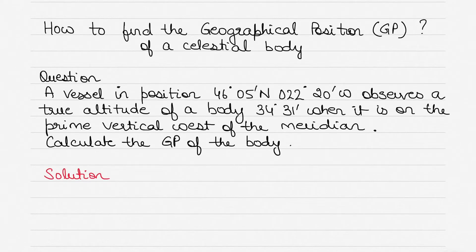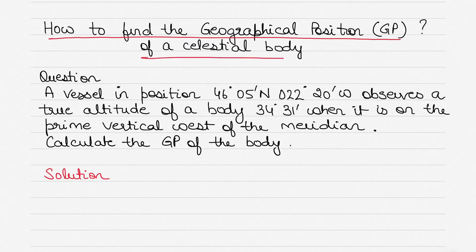Hi everyone, today I continue with teaching you about the rational horizon diagram and the PZX triangle and how it can be used to find the different aspects of a celestial body's position. In today's video we'll be focusing on how to find the geographical position, known as GP, of a celestial body. I'm making this video because in the last video I mentioned the geographical position and got a few questions asking what exactly it is, so I'll explain it again using an example question.